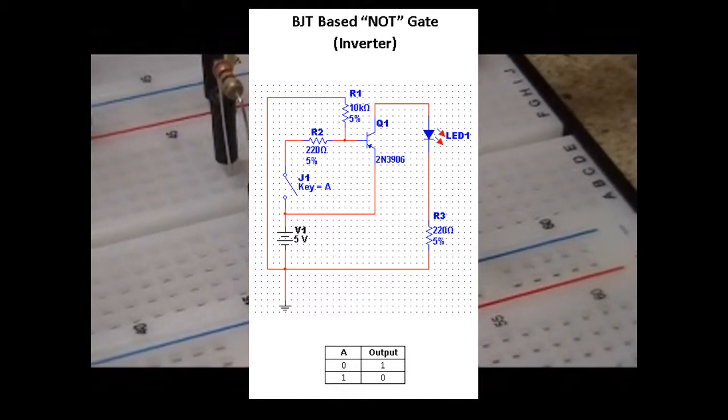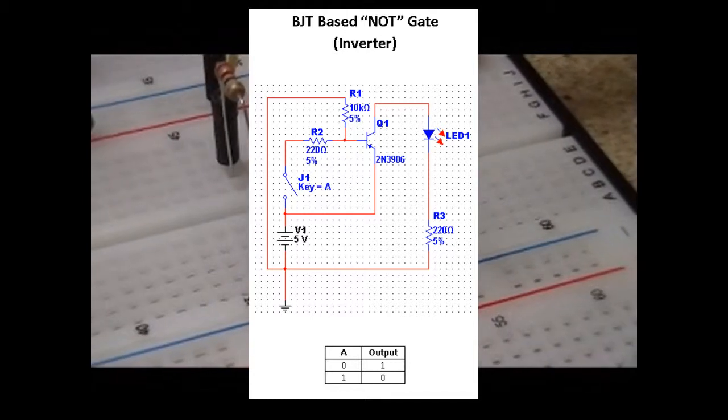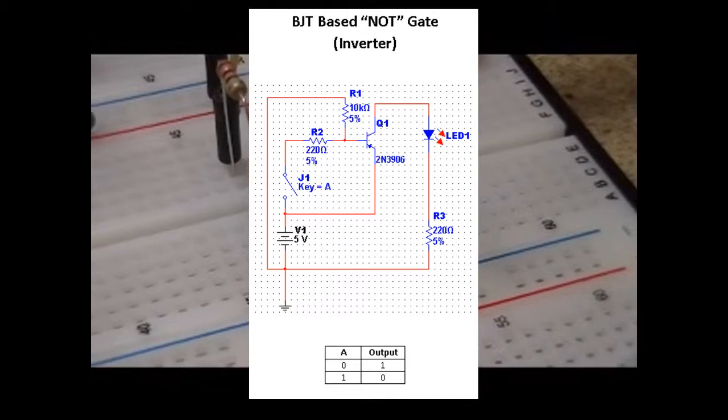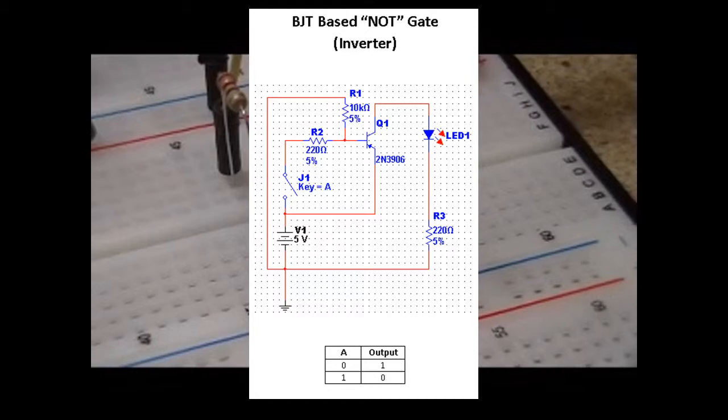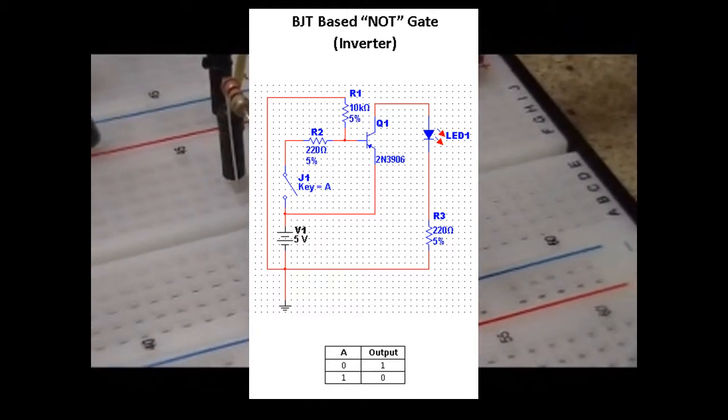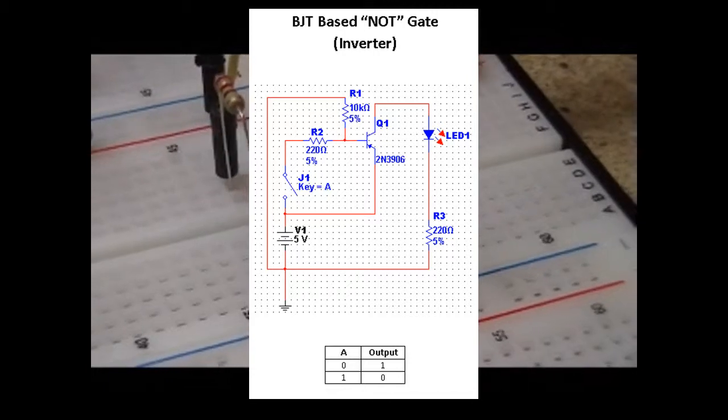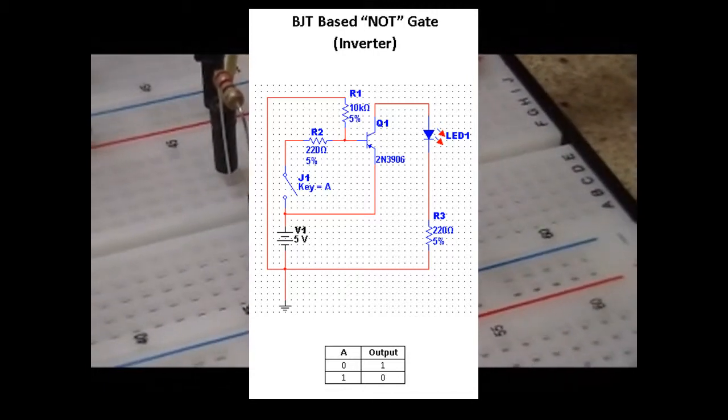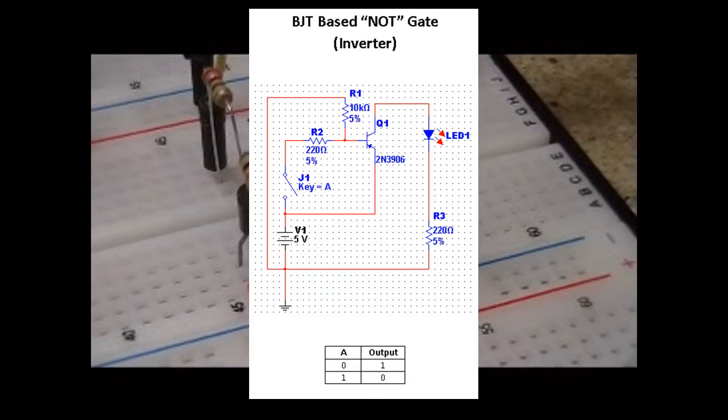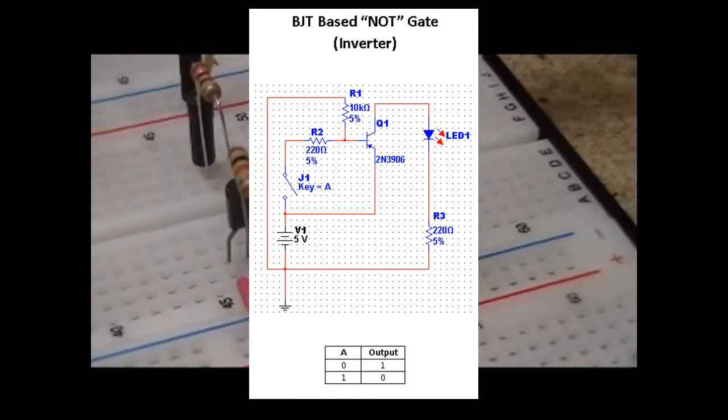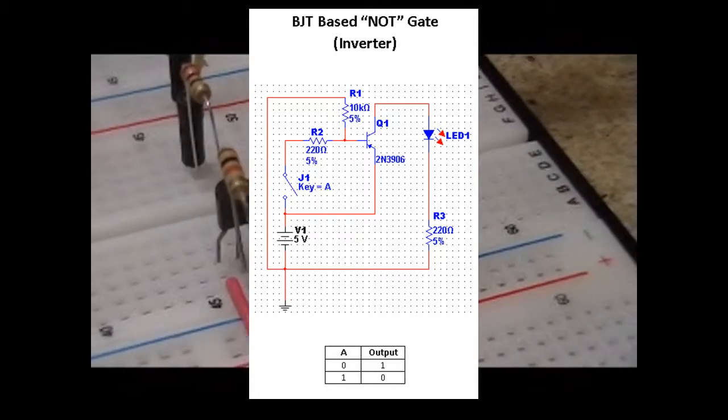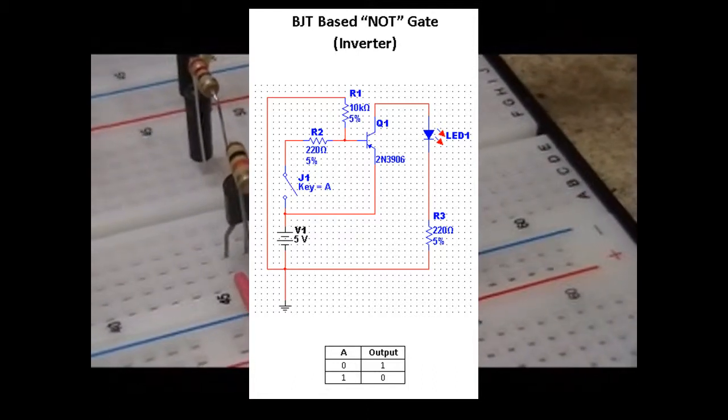Once the switch is closed, then positive current flows through the 220 ohm resistor, back through the 10k ohm to ground, basically putting the base of the transistor in a positive differential compared to ground. And in essence, cutting off the transistor. When the transistor gets cut off, then basically the LED is no longer lit and goes out.